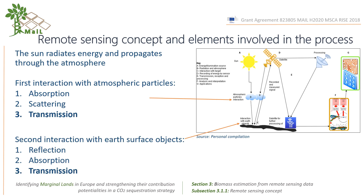At the Earth's surface interaction, we can have reflection, absorption, and transmission. The reflected signal from Earth objects will be sensed by the satellite sensor to be recorded and measured. This data will be sent to the ground receiver for further processing, or sent to other satellites for processing, in the case of passive remote sensing.